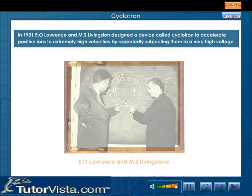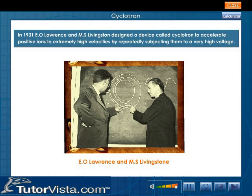In 1931, E.O. Lawrence and M.S. Livingston designed a device called cyclotron to accelerate positive ions to extremely high velocities by repeatedly subjecting them to a very high voltage.